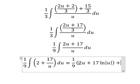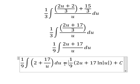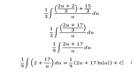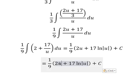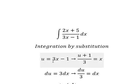Now substitute back: u equals 3x minus 1. So our final answer is one-ninth times 2 times 3x minus 1 plus 17 ln of absolute value of 3x minus 1 plus C.